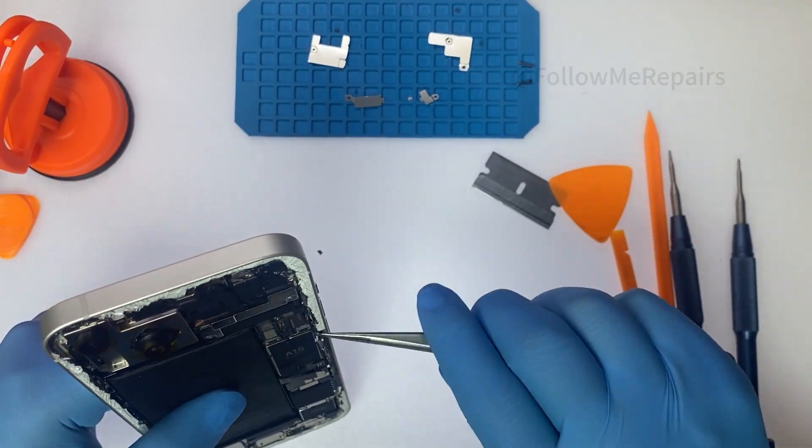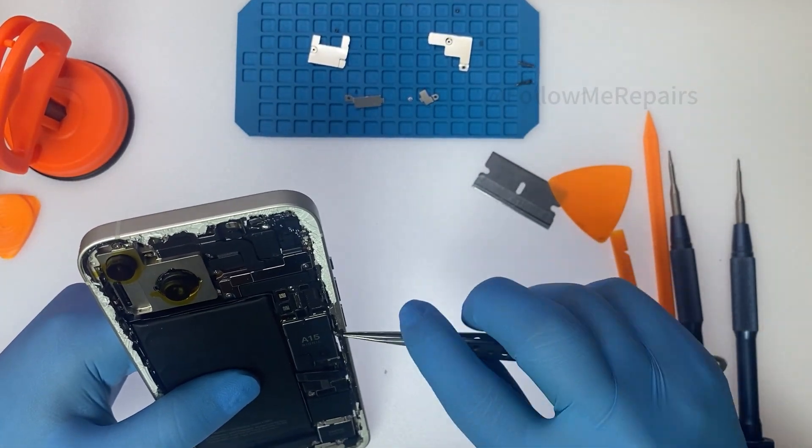Trim the phone frame backside, remove leftover waterproof tape and broken glass on the frame.